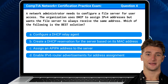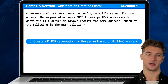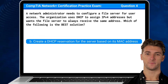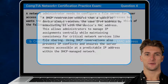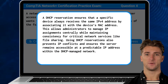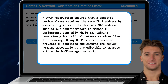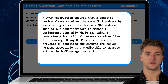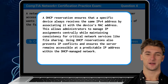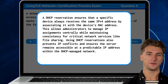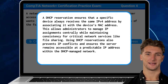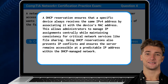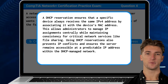The answer is B: Create a DHCP reservation for the server based on its MAC address. A DHCP reservation ensures that a specific device always receives the same IPv4 address by associating it with the device's MAC address. This allows administrators to manage IP assignments centrally while maintaining consistency for critical network services like file sharing.